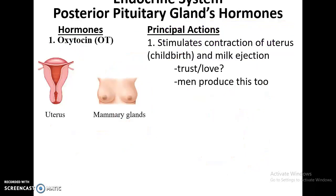One is oxytocin. Oxytocin stimulates contractions in the uterus, especially during childbirth to help during labor, and also stimulates milk ejection — not production — especially when the infant is suckling on the mammary glands. It's also been found that oxytocin helps people develop a sense of love or trust with others, and this hormone is also produced in men — so it isn't just a hormone produced in females.